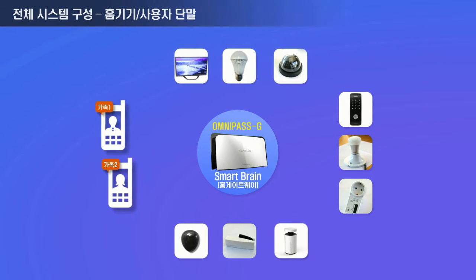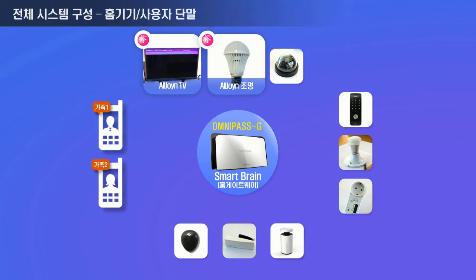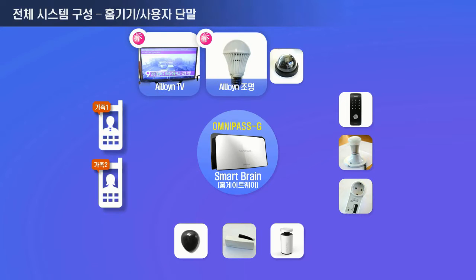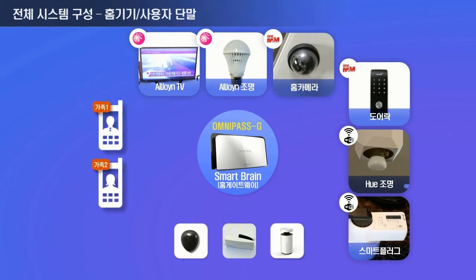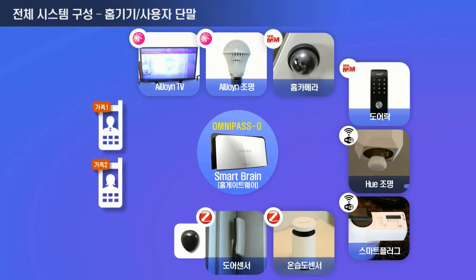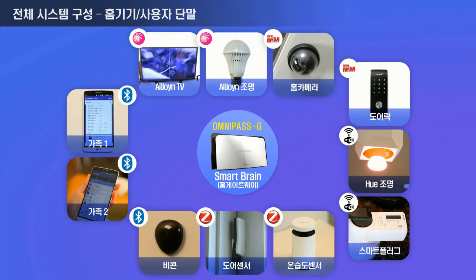The home domain includes AllJoyn, oneM2M, and commercial Wi-Fi appliances, as well as home sensor devices and Bluetooth beacons that are structured around SmartBrain, which acts as the home gateway.